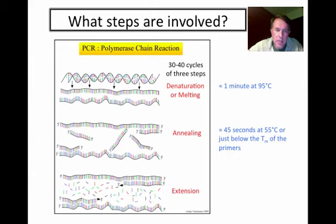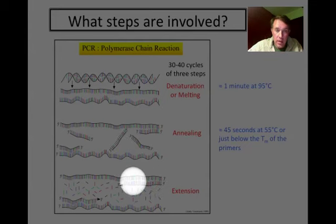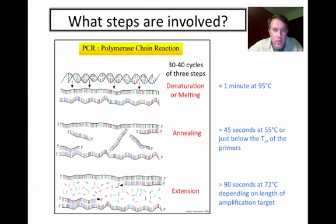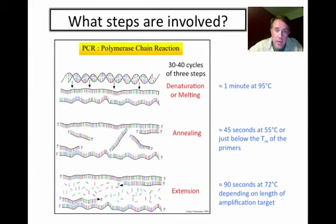Then we do an extension step, where the Taq polymerase does its thing. Once the primers have attached at both ends of the gene, the Taq polymerase will extend and add new nucleotides, doing the actual copying. That's done for about 90 seconds at 72 degrees, which is the optimum temperature for Taq polymerase. Depending on the length of the amplification target, you may go shorter or longer than 90 seconds. Basically, these three steps get repeated over and over again, and using exponential growth, you double the number of copies every cycle — 2 to the 30th power becomes a very large number pretty fast.